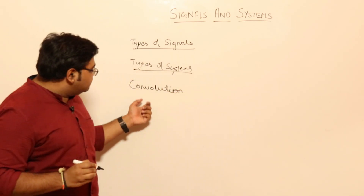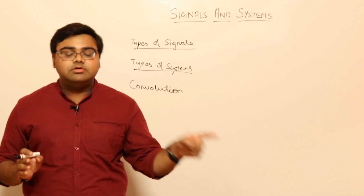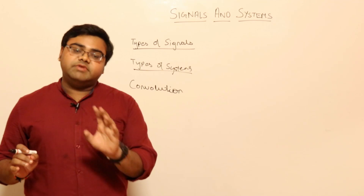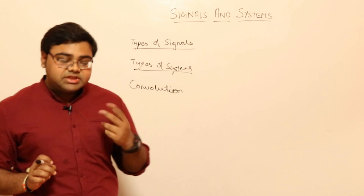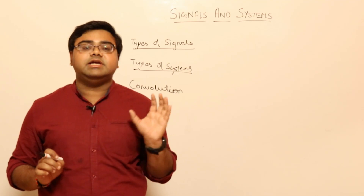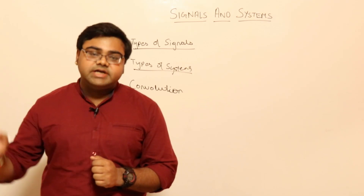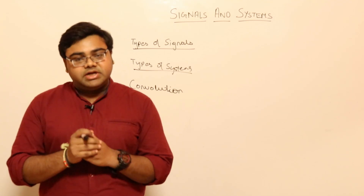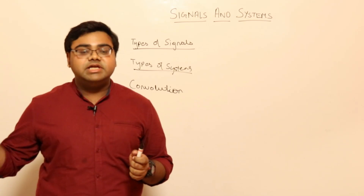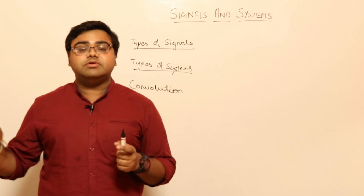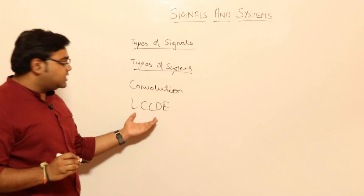Once you've learned convolution — both discrete and continuous convolution — another representation of a linear system is called LCCDE, which stands for Linear Constant Coefficient Differential Equation. I'm pretty lazy so I won't write the full form every time, but LCCDE is nothing but a representation of LTI systems.